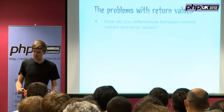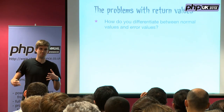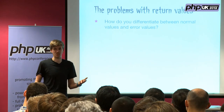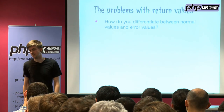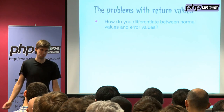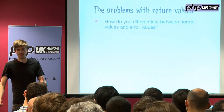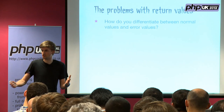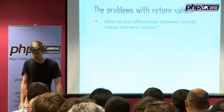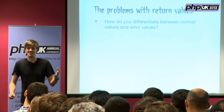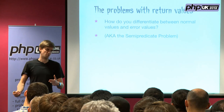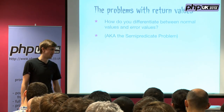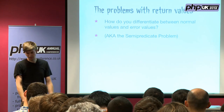PHP gets around this by being able to return whatever it wants from functions — so it can return false instead of an integer value. Think of strpos: if it can't find the string you're looking for, it returns false. This is called the semi-predicate problem, which is just a fancy name for what I just described — you can tell your friends about that later in the pub.